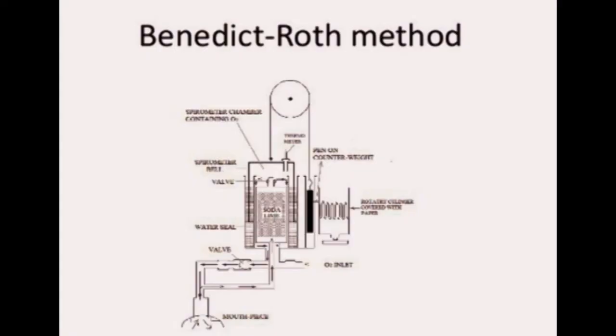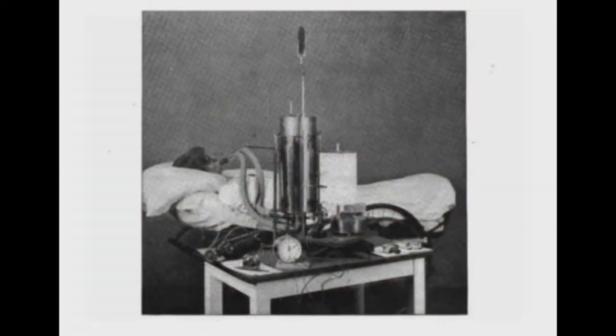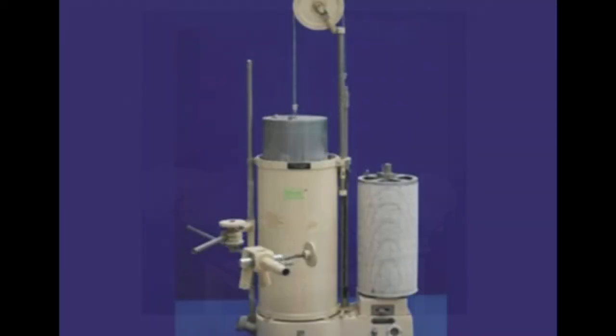Basal metabolism is usually determined using the Benedict-Roth apparatus, where the subject wears a nose clip and breathes through a mouthpiece connected to the apparatus by two tubes. The subject breathes in oxygen through the respiratory valve and breathes out into the carbon dioxide absorber, then through the respiratory valve into the spirometer bell. The amount of oxygen used is recorded on a revolving drum by the pen attached.